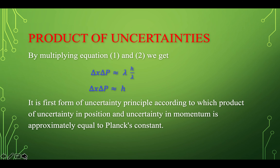If we multiply equation 1 and equation 2, the left-hand sides multiply together and the right-hand sides multiply together. So delta X times delta P is approximately equal to lambda times h over lambda, which gives delta X times delta P approximately equal to h. This is the first form of the uncertainty principle: the product of uncertainty in position and uncertainty in momentum is approximately equal to Planck's constant.